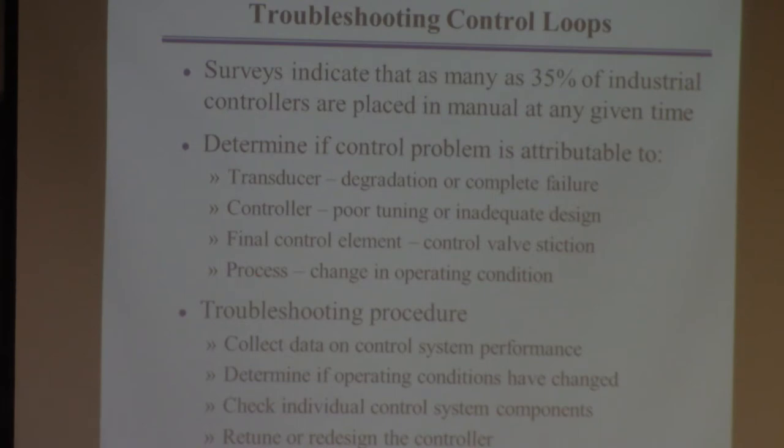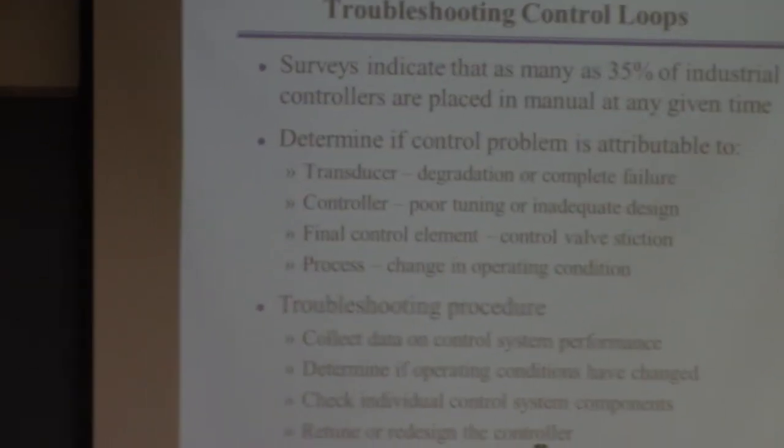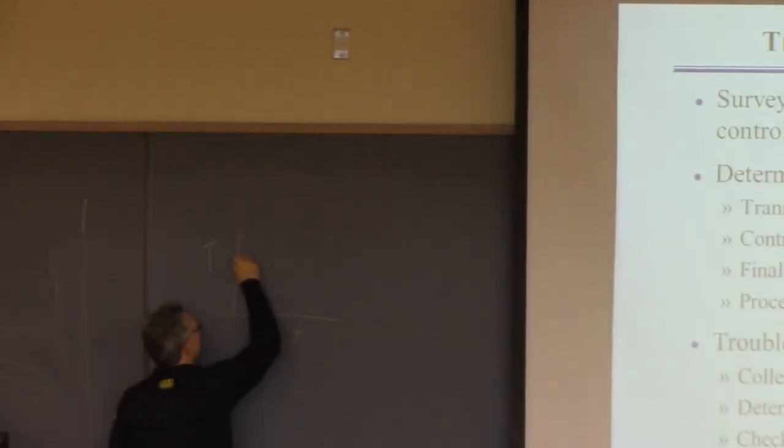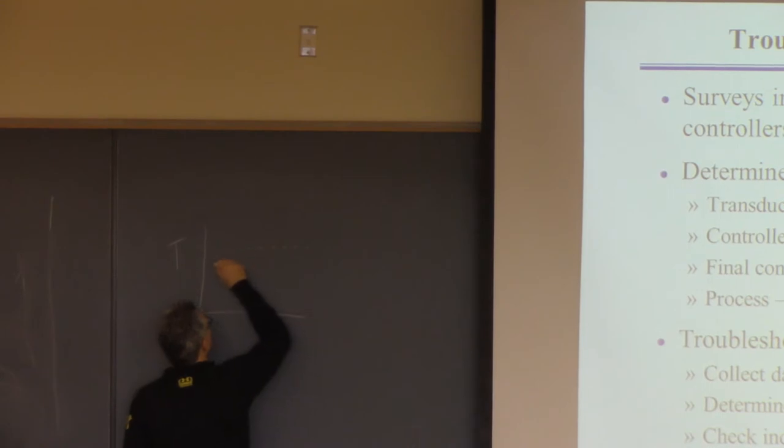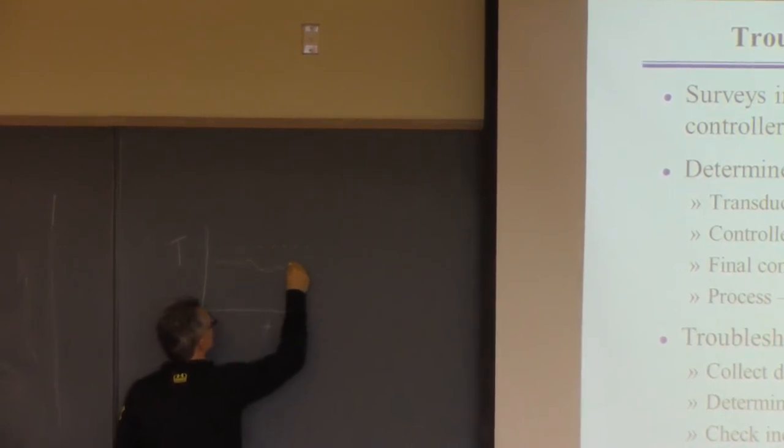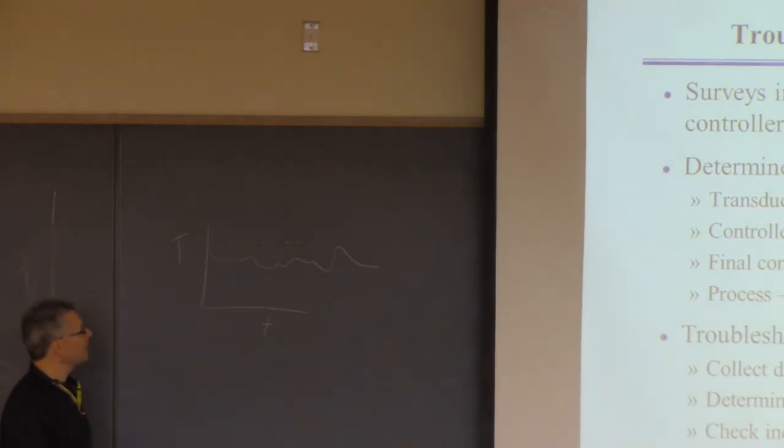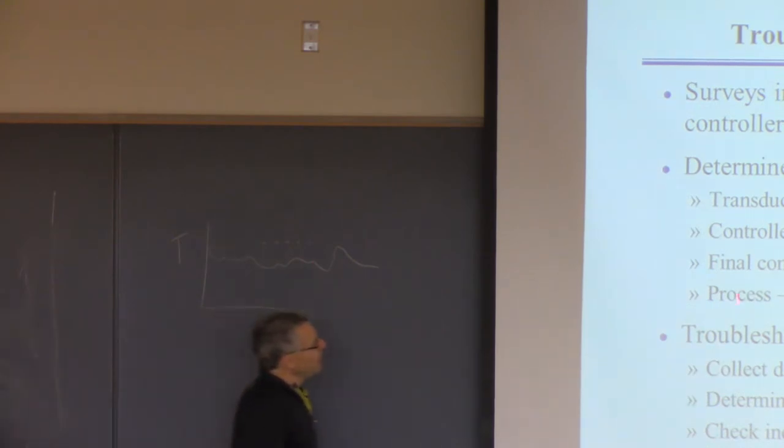So of course the problem is when the controller doesn't work, you don't know what the problem is typically. All you know the controller's not working. How do you know the controller's not working? Because here's the temperature, and here's time, and here's the set point, and here's the temperature. So if somebody sees this, either you or the operators, and they say hey, temperature controller on the heat exchanger E3 is not working. Then you look at it and you say, oh well, that doesn't look so good. So then the job is to figure out what's gone wrong and try to fix it.